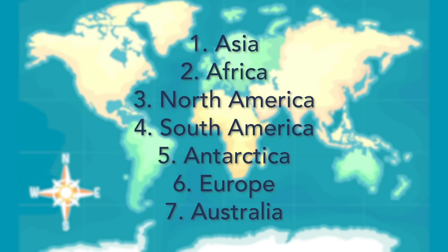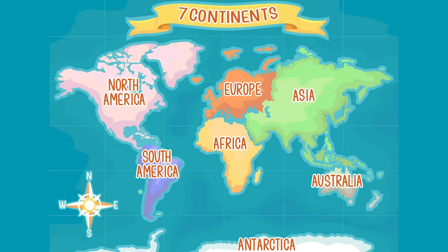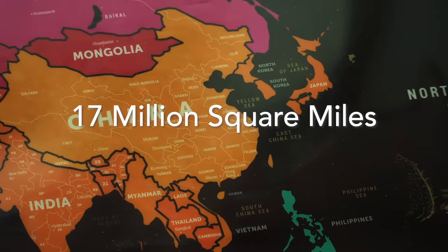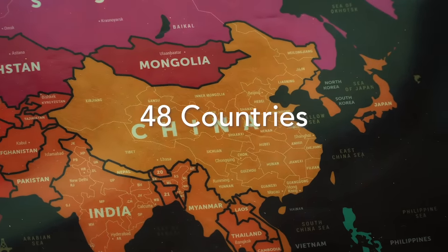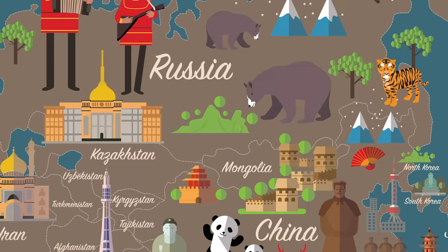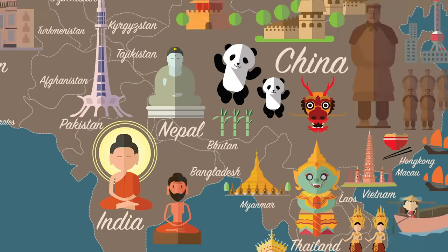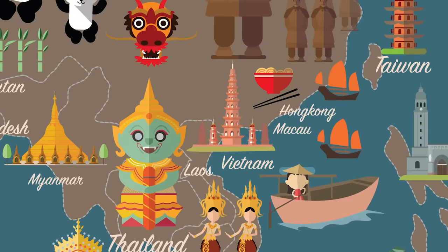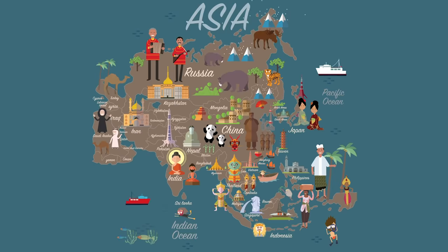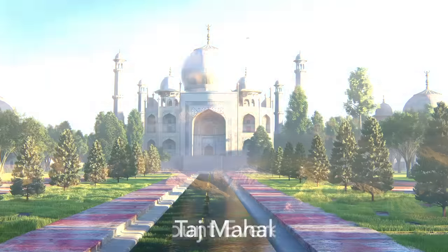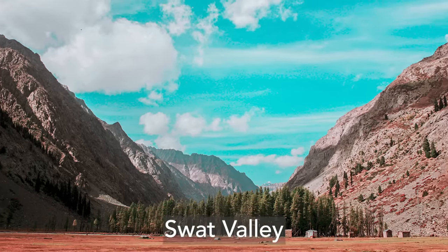Asia is the largest continent on our planet at more than 17 million square miles. While North America has 23 countries, Asia has more than double that. Some of the most notable countries in Asia are China, Russia, India, Japan, South and North Korea, Vietnam, and many others. The Middle East — yep, that's part of Asia too. If you've ever visited the Great Wall of China, the Taj Mahal, Mount Everest, or the Swat Valley in Pakistan, then you've been to Asia.